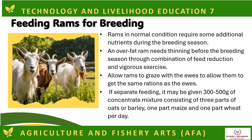Feeding rams for breeding: rams in normal condition require some additional nutrients during the breeding season. An over-fat ram needs thinning before the breeding season through a combination of feed reduction and vigorous exercise. Allow rams to graze with the ewes to get the same rations. If fed separately, they may be given 300–500 grams of concentrate mixture consisting of three parts oats or barley, one part maize, and one part wheat per day.